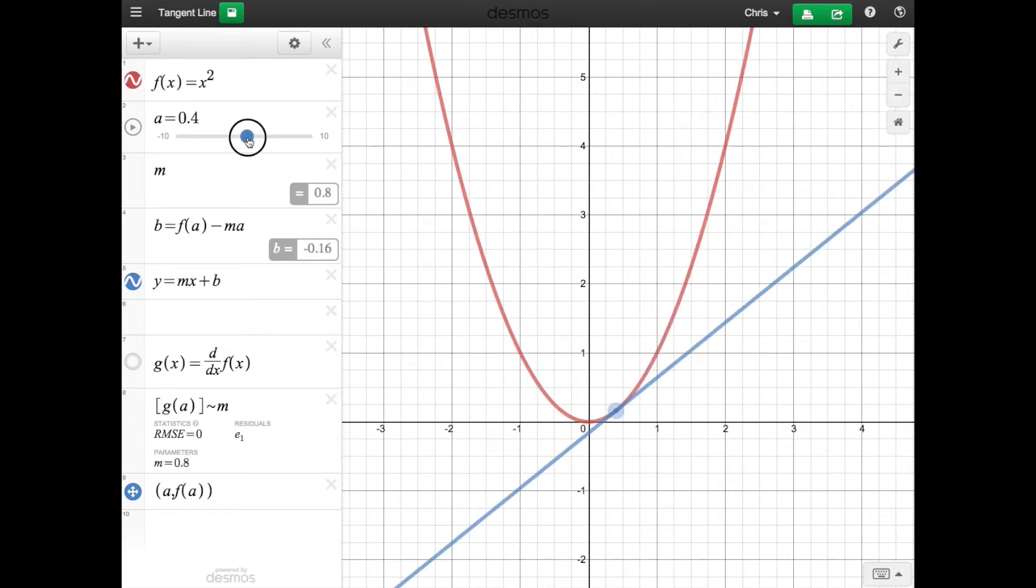And if you want, you can shift this right here. And as you can see, the tangent line moves to whatever point you move. So you could also type it in here, so say you wanted it 2, and then it goes right to 2.